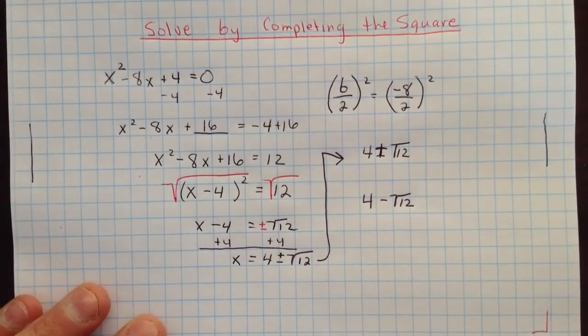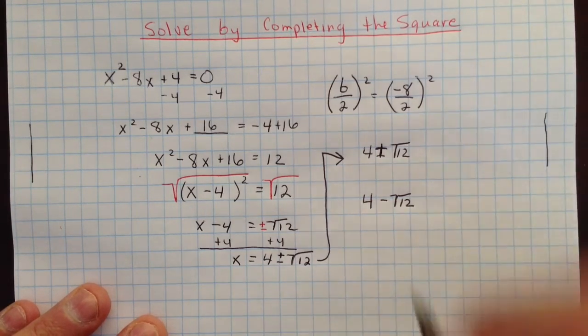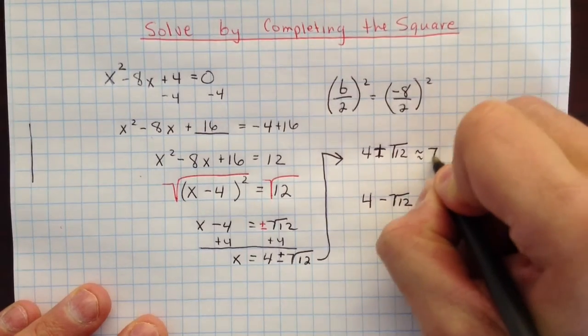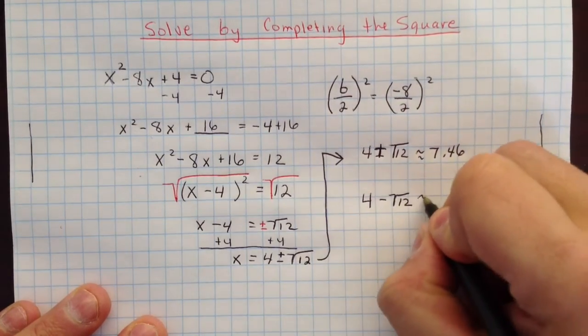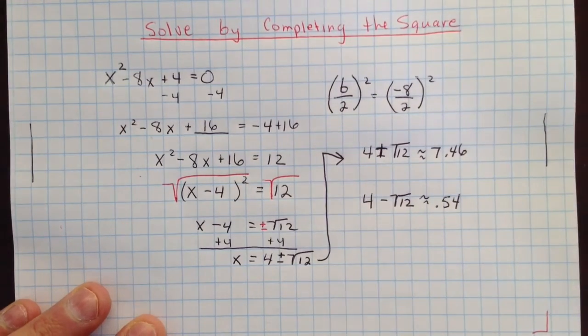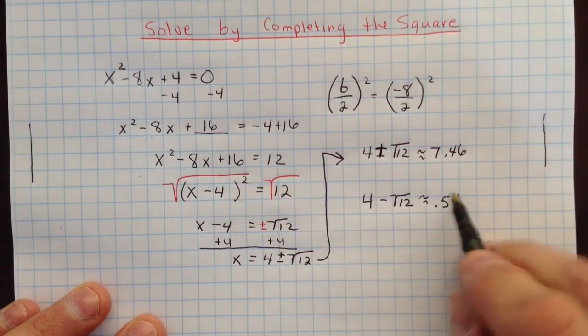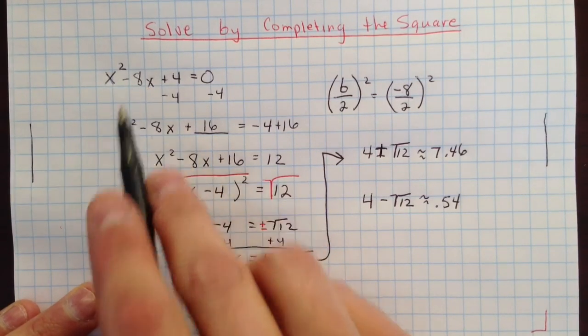And if you put those in your calculators, 4 plus the square root of 12 ends up equaling 7.46 approximately. And 4 minus the square root of 12 is approximately 0.54. Those are your two solutions. You should put them back into x to make sure they work. Double check to make sure they work.